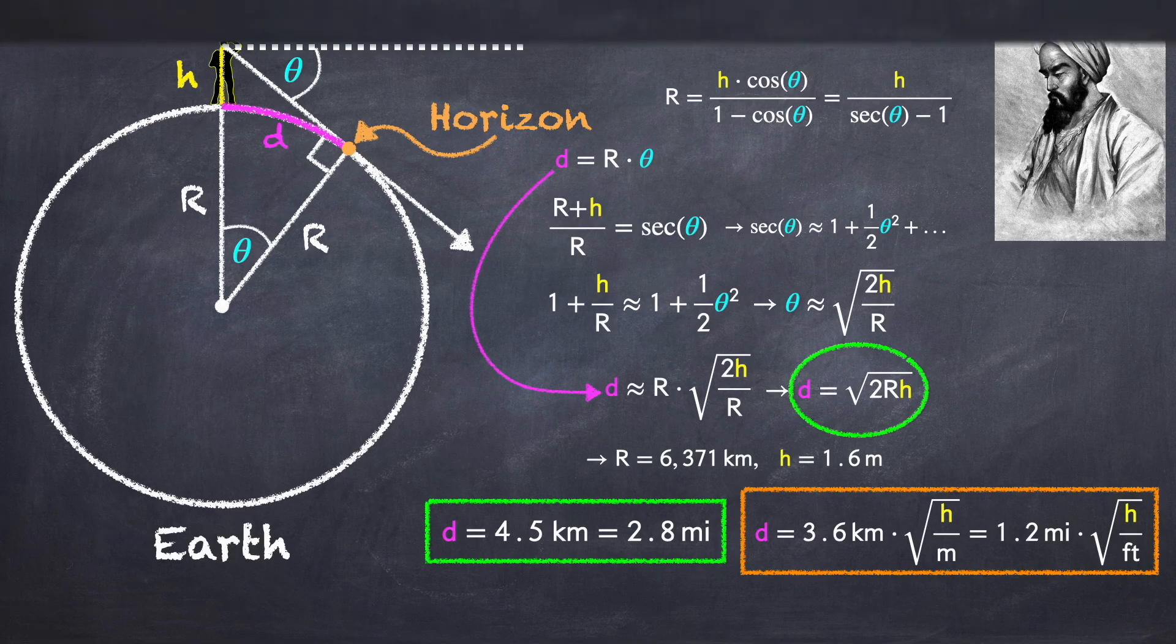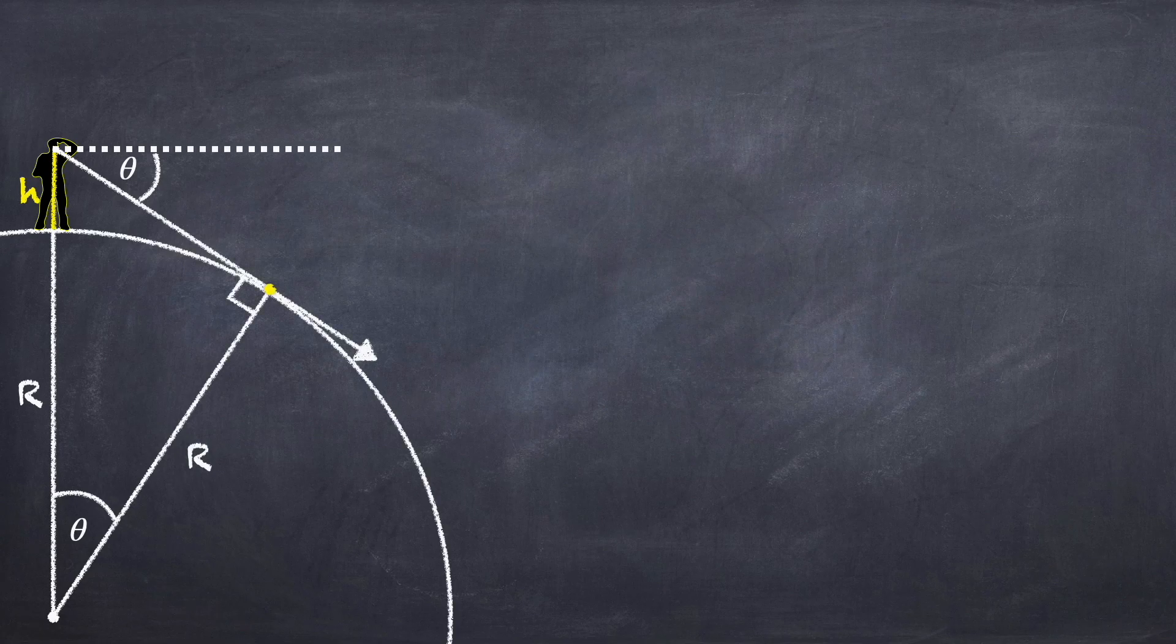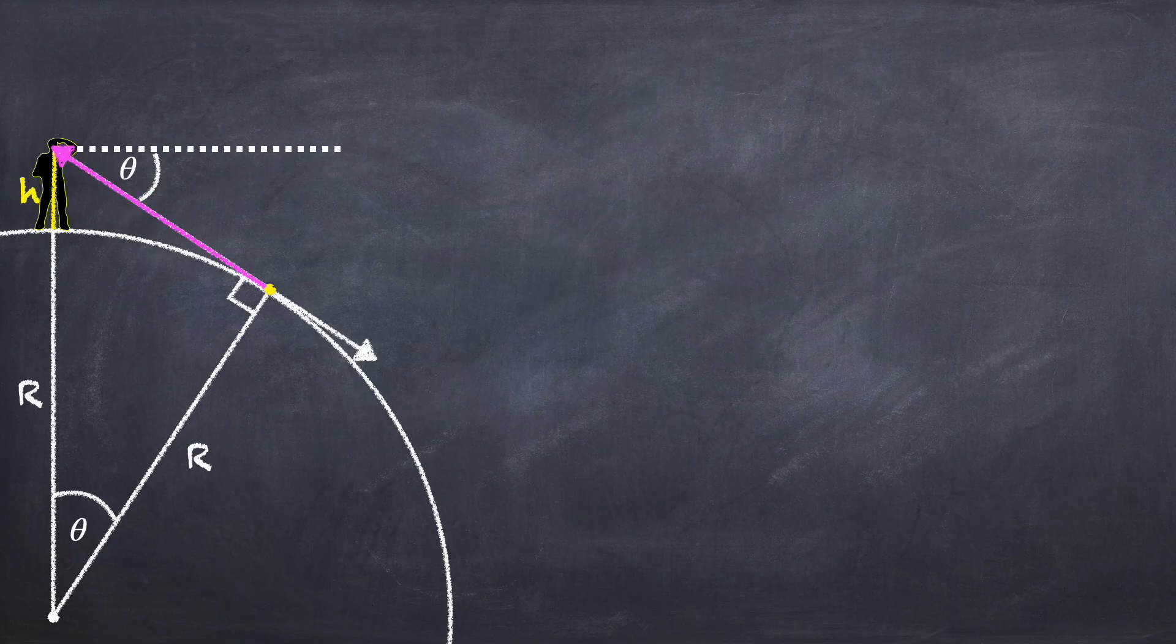Except that there's a slight problem in our method. If we redraw our diagram, we assumed here that light will travel from the horizon in a straight line to our eye. But actually light doesn't travel in straight lines.